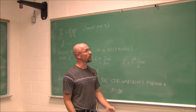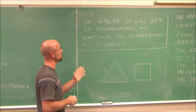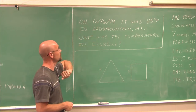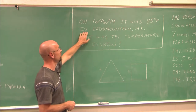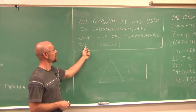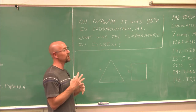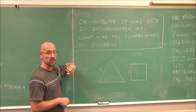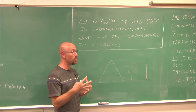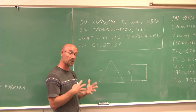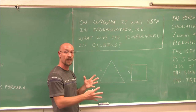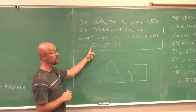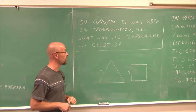Here's one to attempt yourself: On June 16, 2014, it was 85 degrees Fahrenheit in Iron Mountain, Michigan. What was the temperature in Celsius? Choose the appropriate formula, plug in the values, and find the answer. The answer is 29.4 repeating degrees Celsius — remember to include units, that's very important.